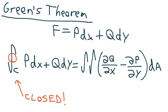We're going to be given an f which is equal generally to pdx plus qdy. Green's Theorem states that the closed line integral of pdx plus qdy is equal to the double integral of dq over dx minus dp over dy times dA.